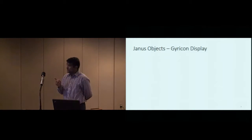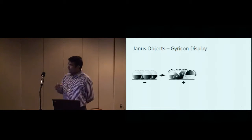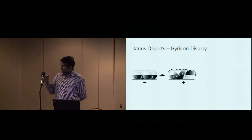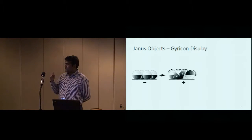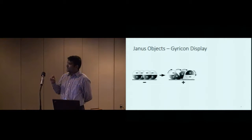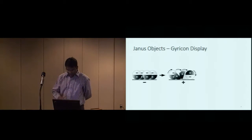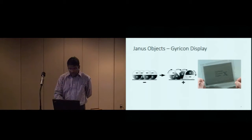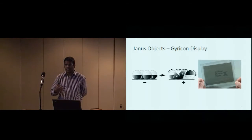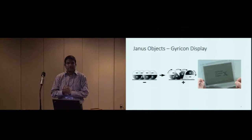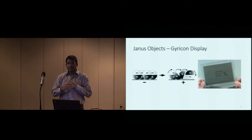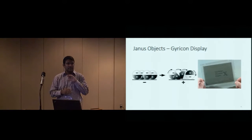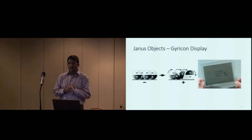What is related to JOLED is the gyricon display, where the black hemisphere is positively charged and the white hemisphere is negatively charged. There are two colors and two charges, and it's rotated using an electric field to create an electronic paper display, developed at Xerox. The motivation behind JOLED was to bring these Janus objects to mid-air and create a mid-air display above the tabletop of a mobile device, and try to improve the user experience in visualizing 3D data.